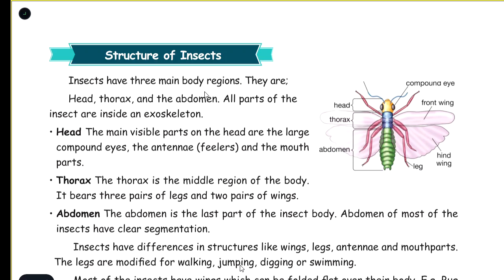Structure of insects: insects have three main body regions. The three main parts are the head, thorax, and abdomen. All parts of the insect are inside an exoskeleton.